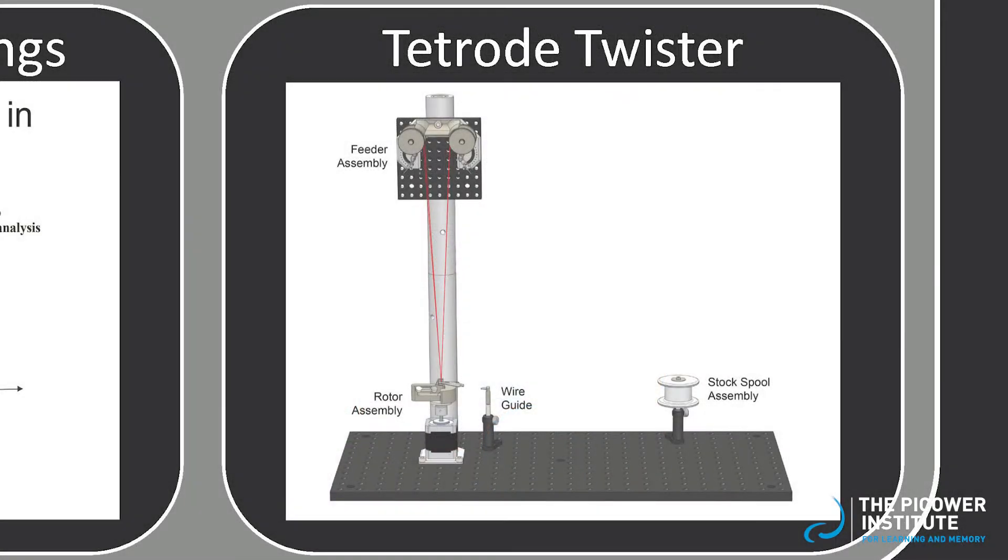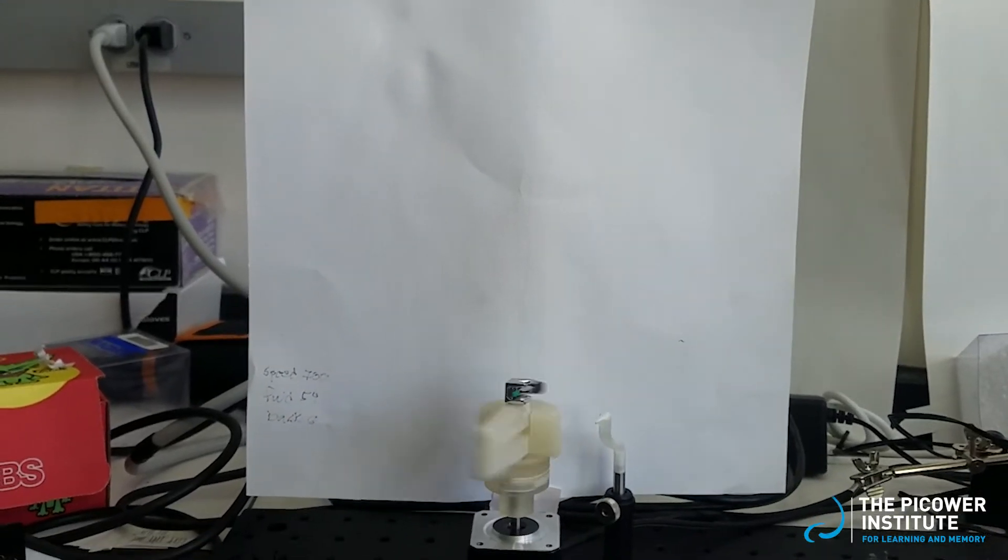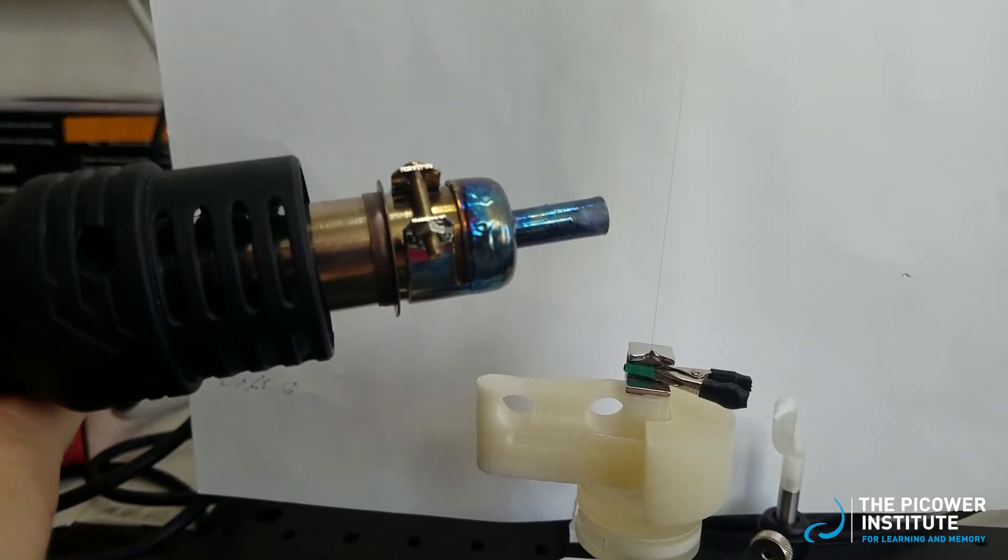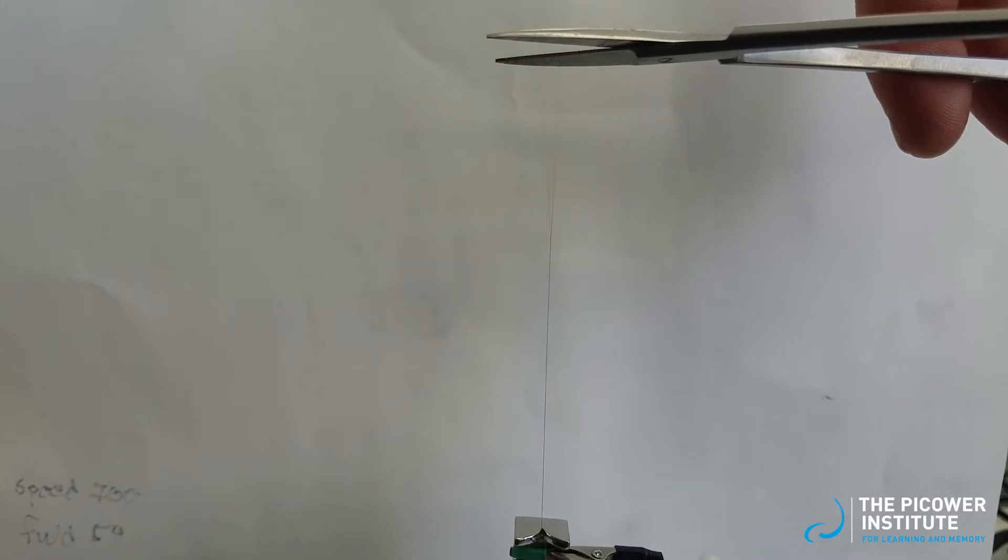We make tetrodes in the lab workshop with our tetrode twister, which was designed and built by Wilson lab postdoc John Newman and postdoc Jacob Voiz from the Harnett lab. Tetrodes are made by twisting four electrode wires around each other, fusing them together with a heat gun and cutting them down to size.